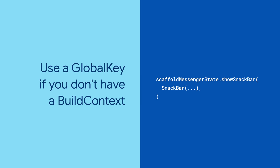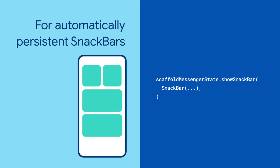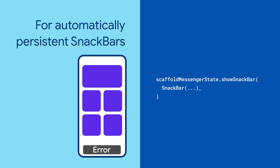Everything else about ScaffoldMessenger is the same — you still use showSnackBar like before and pass in the same snack bar values as before. Except now, if your users do something that creates a snack bar right before they navigate, or even after they navigate, they'll still see that notification.